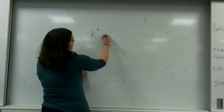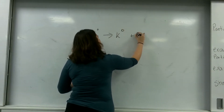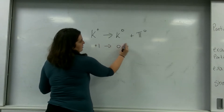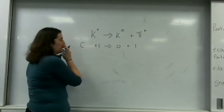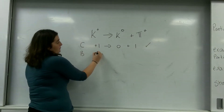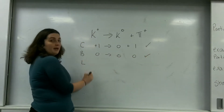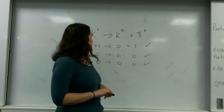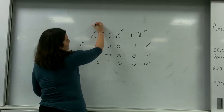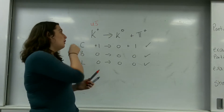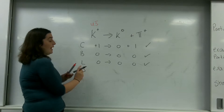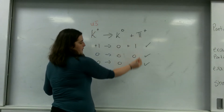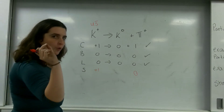Let me show you what I mean. Here is a kaon plus going to a kaon naught plus a pion plus. Looking at charge: plus one on the left, plus one on the right — that's conserved. We look at baryons — none of them are baryons. We look at leptons — none of them are leptons. Now looking at strangeness: a kaon plus has a quark composition of up and anti-strange, and therefore has a strangeness of plus one. The pion does not have any strangeness. Remember, kaons are the only ones with strangeness.